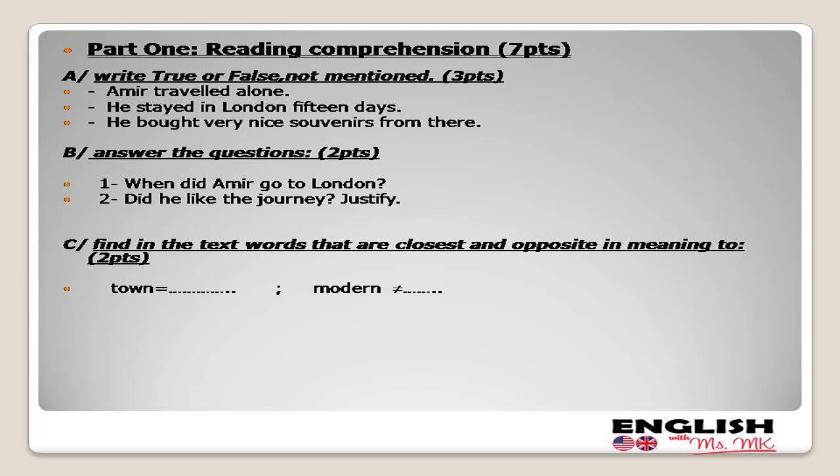Concerning the first part — reading comprehension — here we can introduce 'not mentioned' because they are second year pupils. We have two statements and two questions: a wh-question and a yes/no question. I relied on the lesson of yes/no questions. Then we are going to ask them to find a synonym and an antonym in the text.